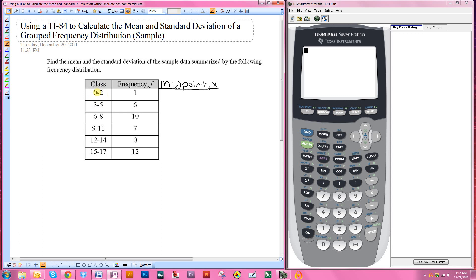So the midpoint here is going to be 0 plus 2 divided by 2, which is just 1. These are pretty easy midpoints to find. So I don't need to do the calculation for each one.